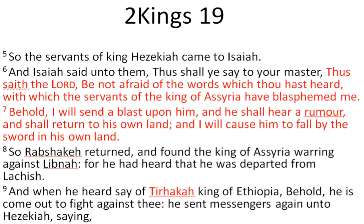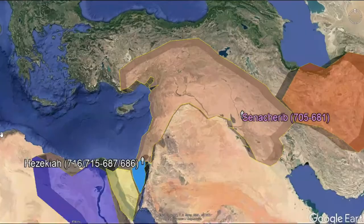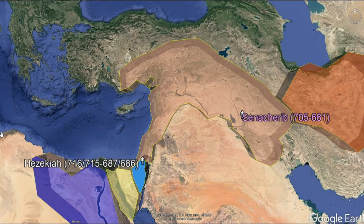Isaiah has a dialogue to Hezekiah: 'Thus saith the Lord, be not afraid of the words which thou hast heard, with which the servants of the king of Assyria have blasphemed me. Behold, I will send a blast upon him, and he shall hear a rumor and shall return to his own land, and I will cause him to fall by the sword in his own land.' Then in 2 Kings 19 verse 9: 'And when he heard say of Tirhaka, king of Ethiopia, behold, he has come out to fight against thee, he sent messengers again unto Hezekiah.' That's really interesting too, because we have this other king, Tirhaka.